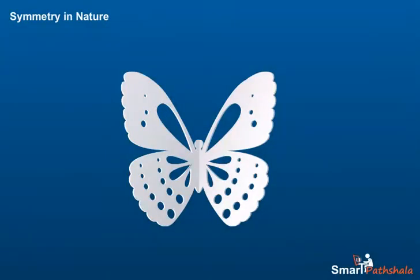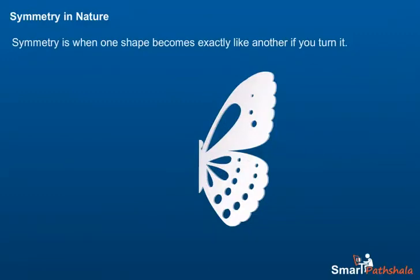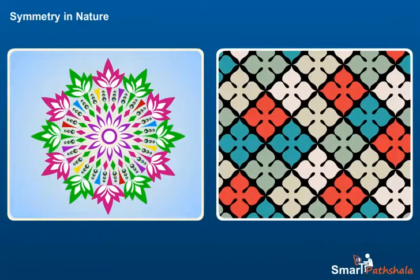Consider the design shown here. If we divide the figure as shown by the line segment, then we get two identical halves. If we turn and fold the design along the line, then both the halves of the design overlap each other. In fact, they are mirror images of each other. So we can say that symmetry is when one shape becomes exactly like another if you turn it. These two parts are congruent or identical to each other.